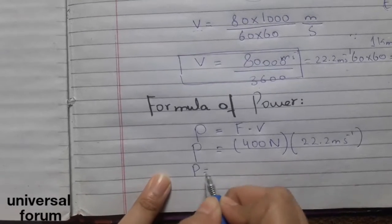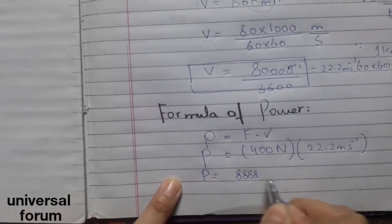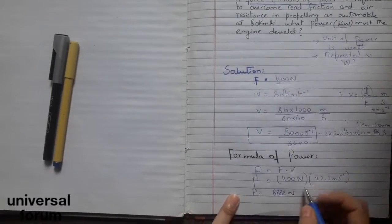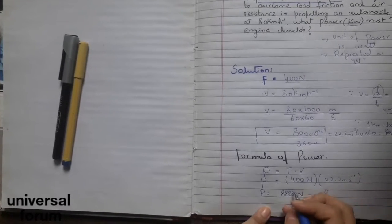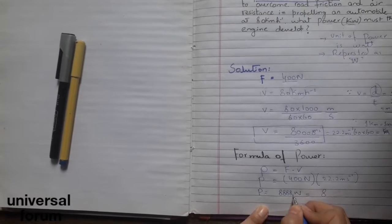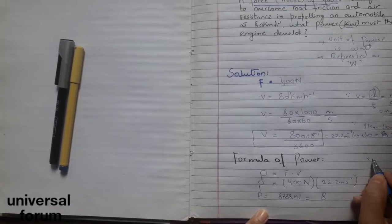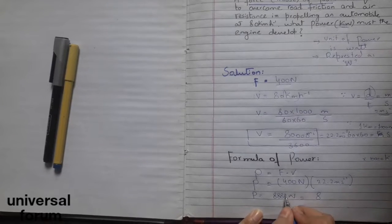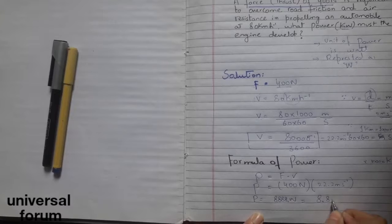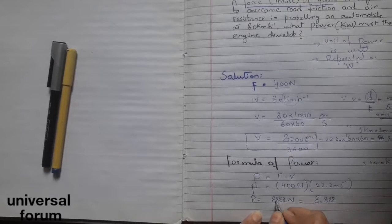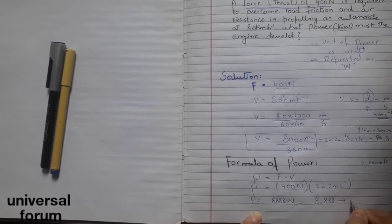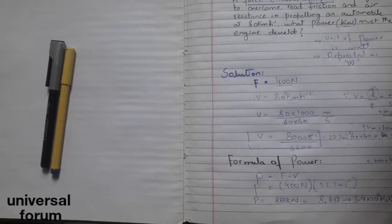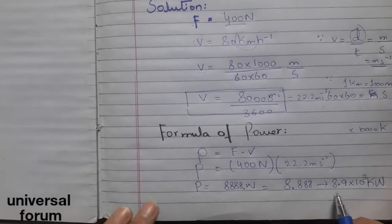By solving, P equals 8,880 watts. As we know we need the power in kilowatts, so I'm moving the decimal point three places because three zeros means kilo. So 8.88, which is 8.9 times 10 to the power 3, or 8.9 kilowatts.